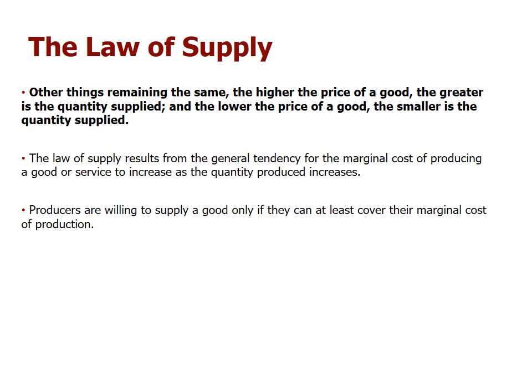The law of supply is simple: other things remaining the same, the higher the price of the good, the greater the quantity supplied. This contrasts with demand — when price goes up, quantity demanded goes down. For supply it's the opposite: when price goes up, suppliers supply more because they want to make a higher profit. The lower the price, the smaller the quantity supplied.